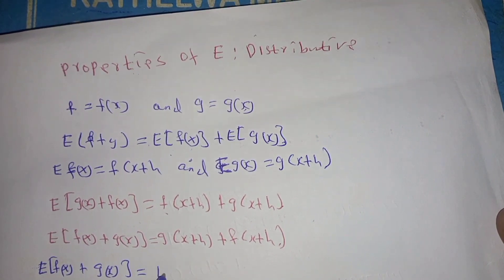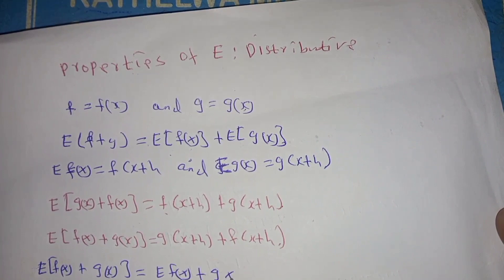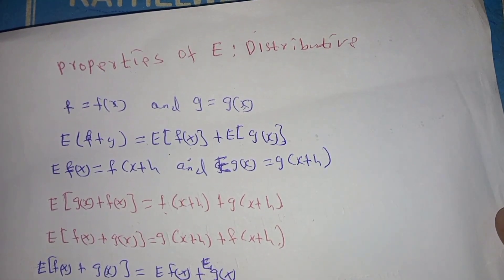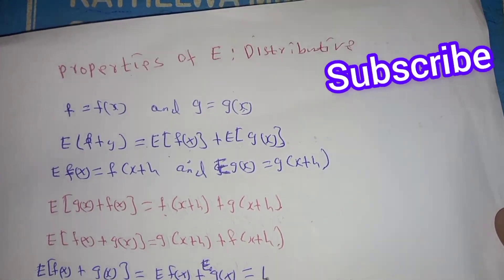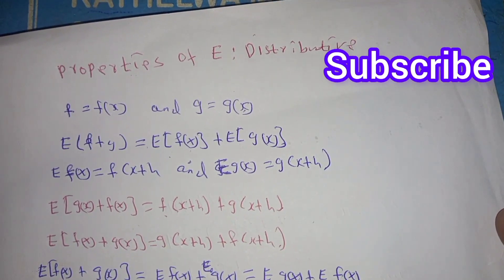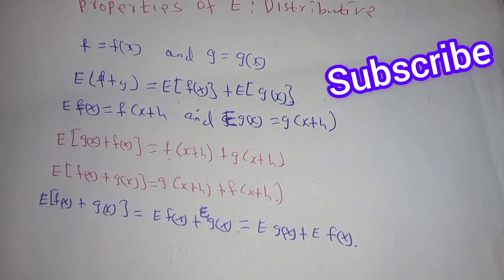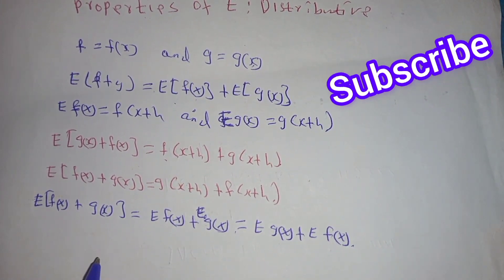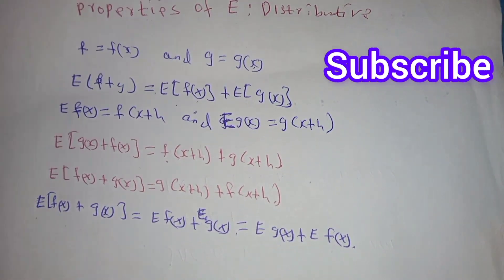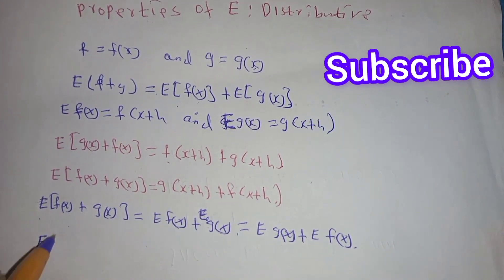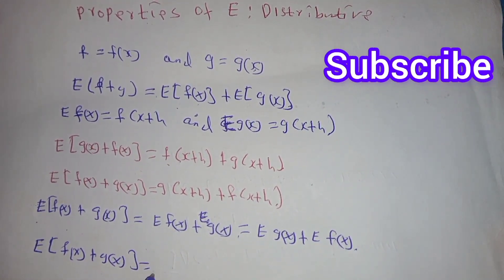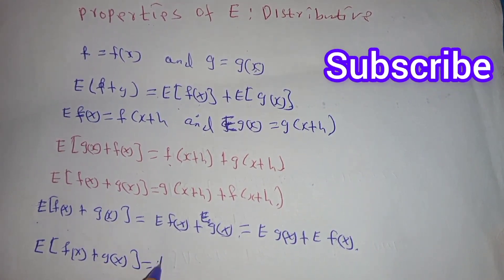E of f of x plus E of g of x. Meaning that the shift operator E is distributive of a function f of x and g of x. So we can write it as E into bracket (f of x plus g of x) is equal to E of f of x